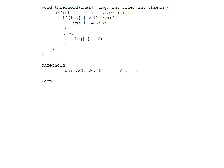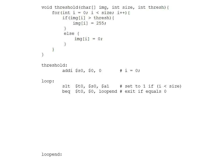We're checking whether i is less than size, so we'll use the set-on-less-than operation to set a temporary value t0 to one if i (s0) is less than size (a1). If i is less than size, the loop should continue. We want to exit when t0 equals zero, so we do a branch-on-equal comparing t0 to zero, which jumps to the loop end label if i is not less than size.